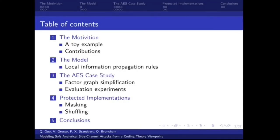This is the outline of the talk. I will start with the motivation, then I will introduce the model. The third part, I will introduce an application of this model on an unprotected AES case. Then Vasant will introduce its applications to protected implementations including masking and shuffling. Last is the conclusion of the paper.